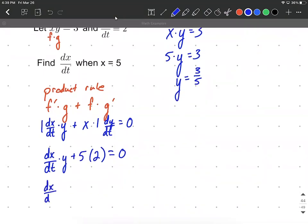dx/dt times 3/5 plus 10 equals 0. A little bit of solving and getting dx/dt on one side by itself, we'll go ahead and say dx/dt times 3/5 is going to be negative 10 as we subtract 10 to move that to the other side.